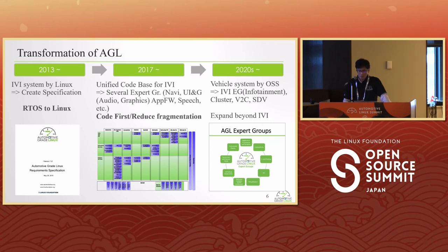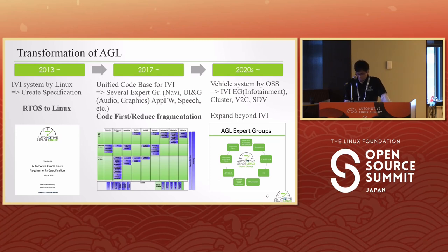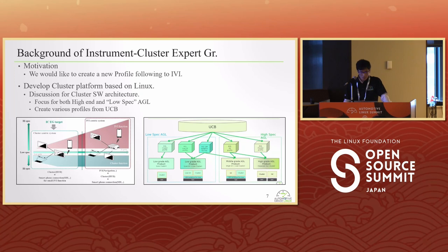Recently, as the vehicle system grows bigger, we focus on creating the vehicle system using OSS. Right now, the IVI system is handled by IVI EG, and the cluster EG and other expert groups are also launched. AGL has expanded beyond IVI to cover the full vehicle system.